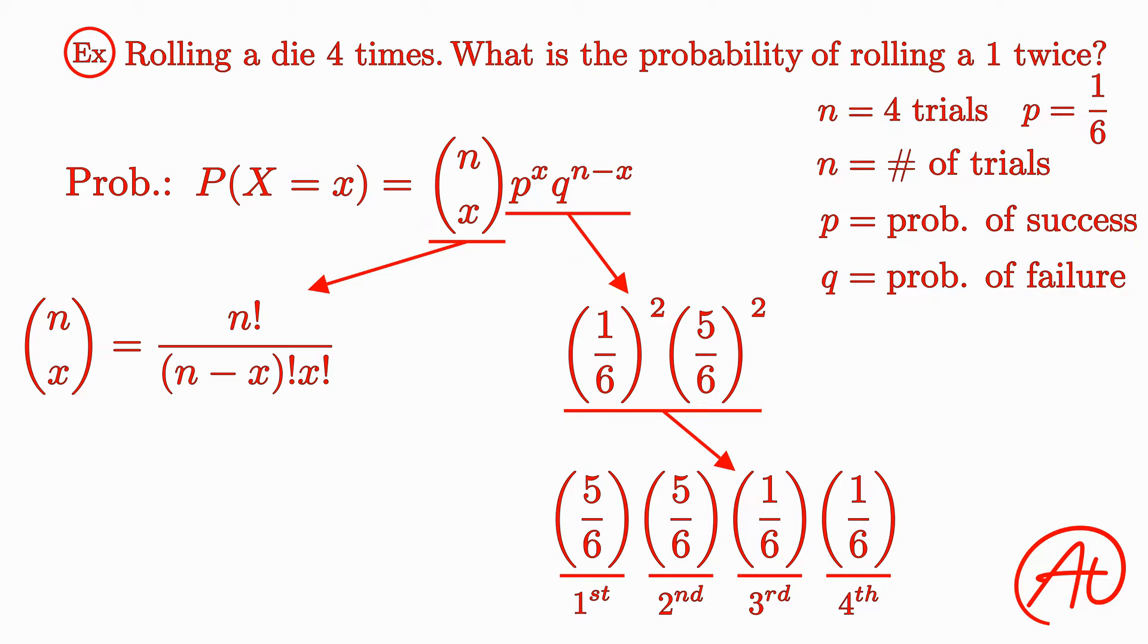And if we wanted to calculate 4 choose 2 for our example, we would take 4 factorial and divide it by (4 minus 2) factorial times 2 factorial. As a result, our top would be 4 times 3 times 2 times 1, and our bottom would be 2 times 1 times 2 times 1. And this equals 24 over 4, or 6. So this means that out of our 4 rolls, there are 6 different ways to roll a 1 twice.